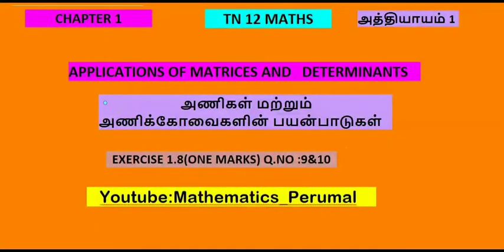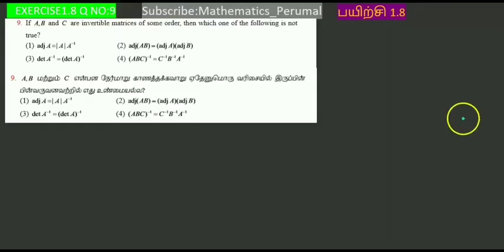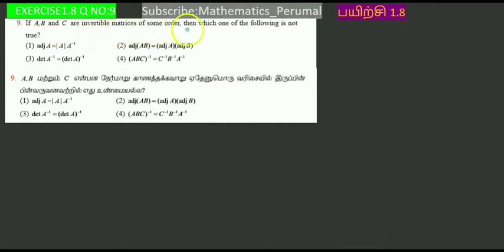Chapter number one, section 1.1, questions nine and ten. Question nine: if A, B, and C are invertible matrices, which one of the following is not correct?